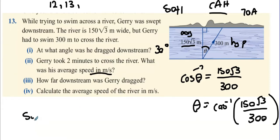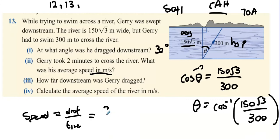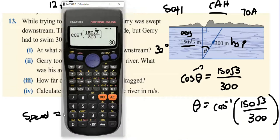It took Jerry two minutes to cross the river — what was his average speed? Speed equals distance over time. He traveled 300 meters and two minutes is 120 seconds, so 300 divided by 120 gives 2.5 meters per second.